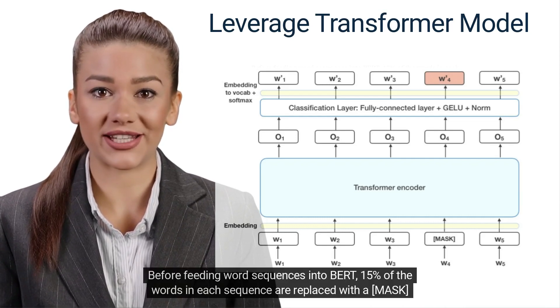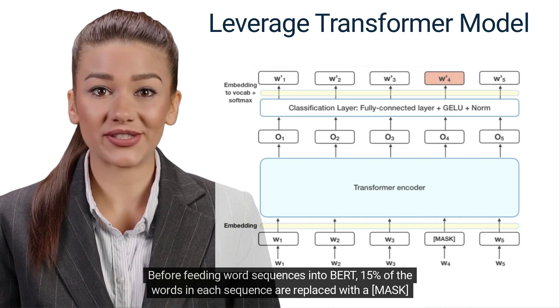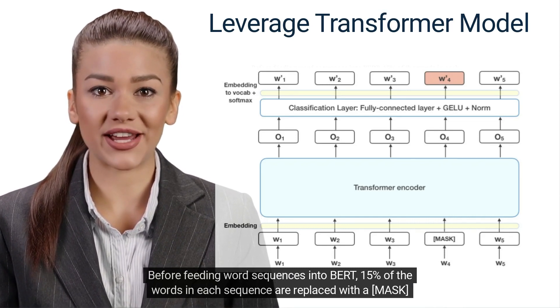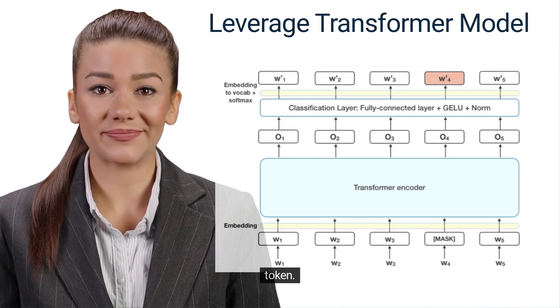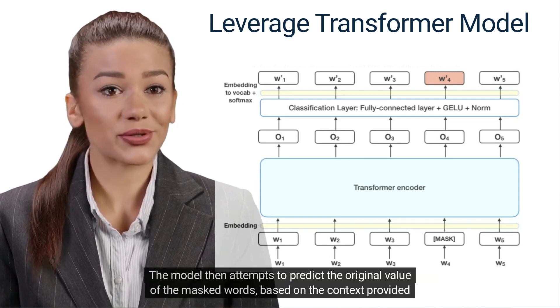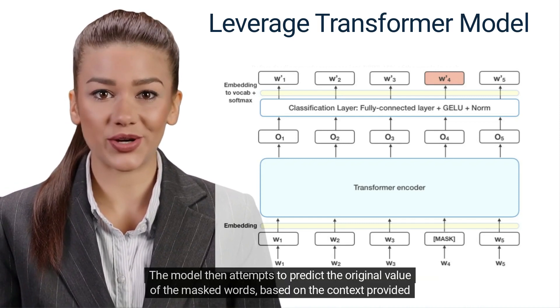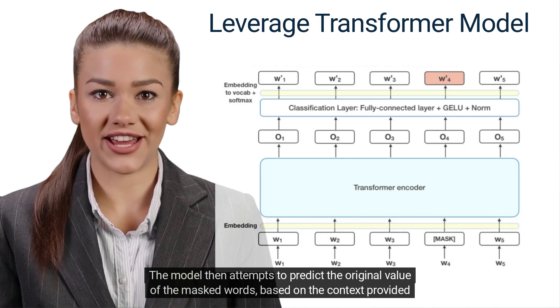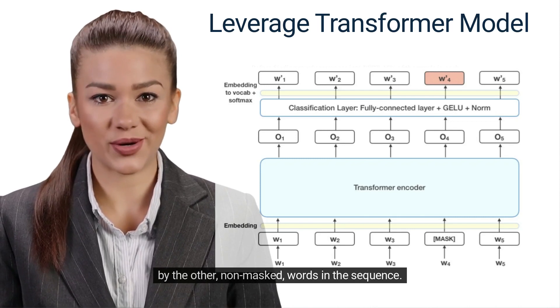Before feeding word sequences into BERT, 15% of the words in each sequence are replaced with a mask token. The model then attempts to predict the original value of the masked words, based on the context provided by the other non-masked words in the sequence.